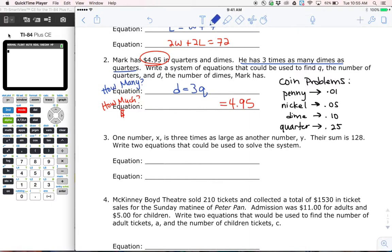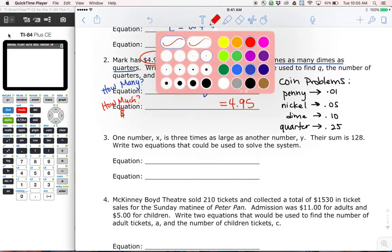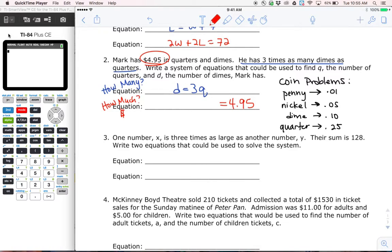Alright. The red equation. The how much equation. Yesterday, when we talked about setting up these equations, we always talk about money. I should have money. If there's money here, there should be money here. There should be money here. I should have three terms that deal with money. So I'm going to write .10 d.